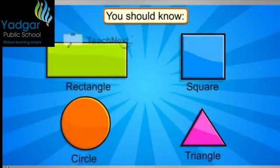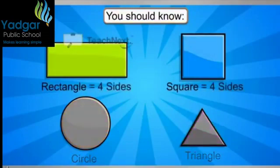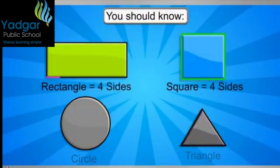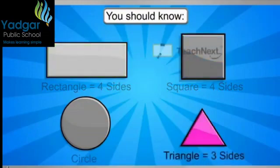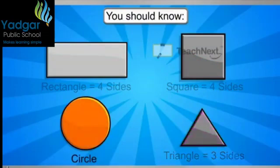A square and a rectangle have four sides. A triangle has three sides. But the circle has no sides.